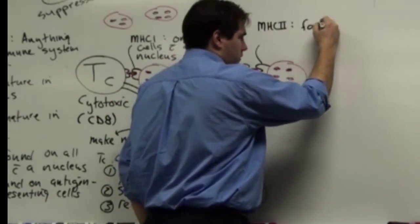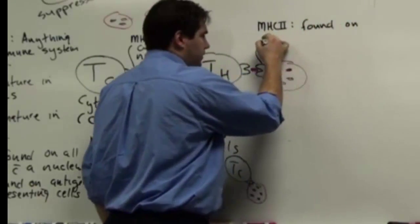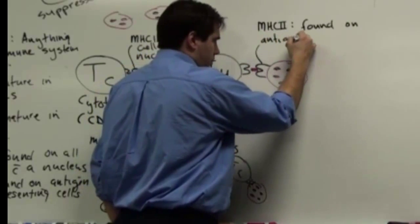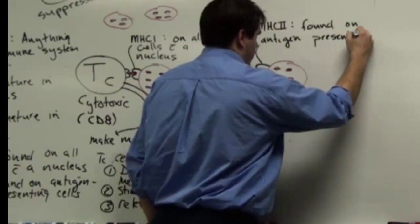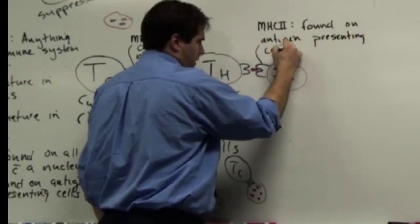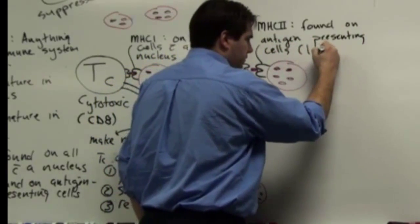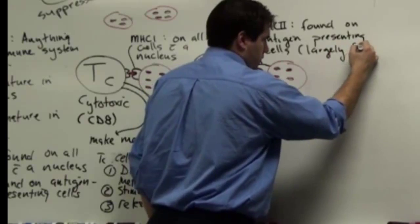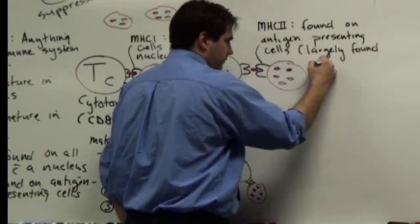These are cells found on antigen-presenting cells. And these are cells largely found in lymph nodes.